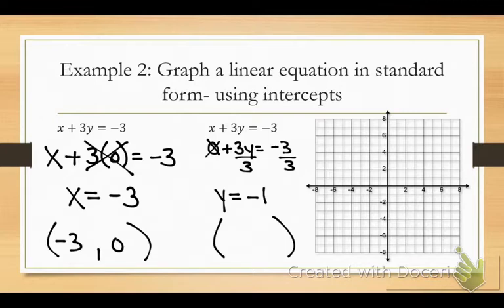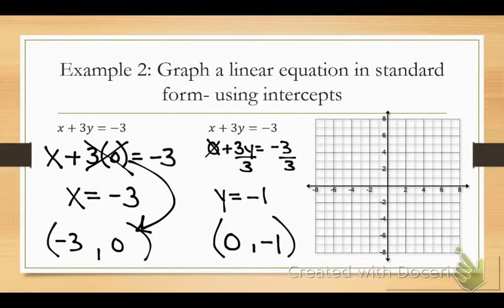Now let's make our second ordered pair. y equals negative 1 — what was my x value in that equation? Zero. So now it's zero, negative 1. I'm making an ordered pair out of each equation. How did I come up with y equaling zero? Because that's what I plugged in for y, and the number I got was my x value. So remember, I'm doing all this to figure out where my line crosses each axis.